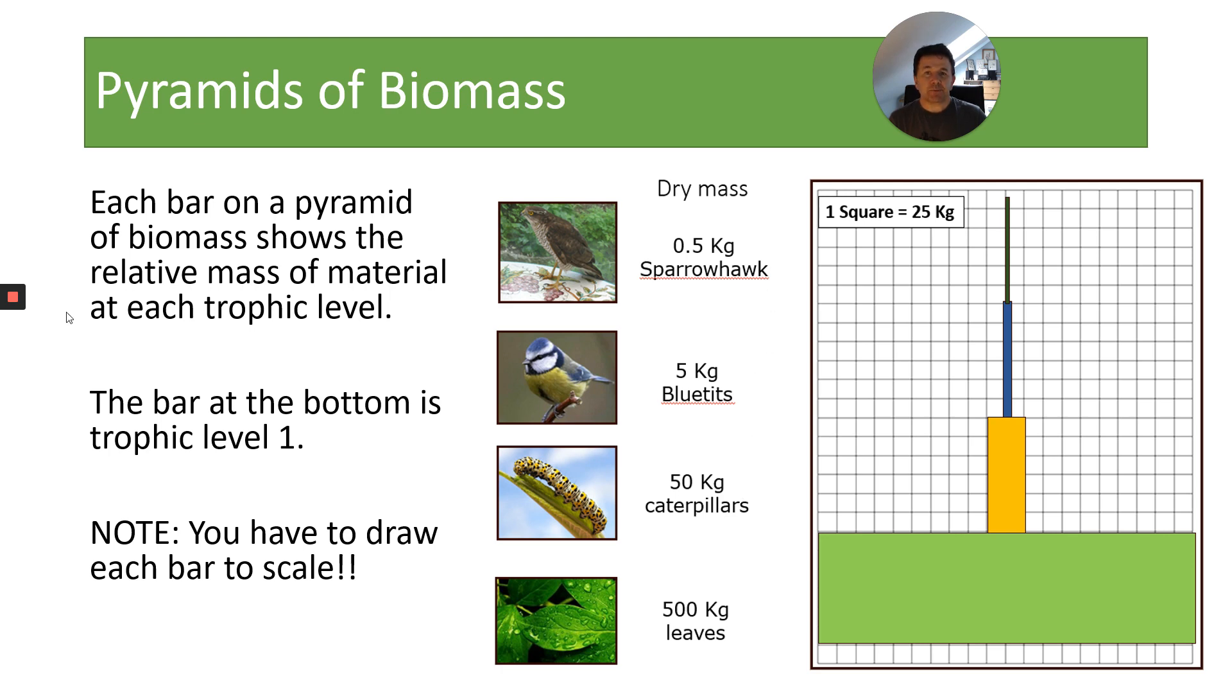Each bar in the pyramid shows the biomass, the relative mass of material at each trophic level. The bar at the bottom is trophic level one—it always is producers, so it's always trophic level one.